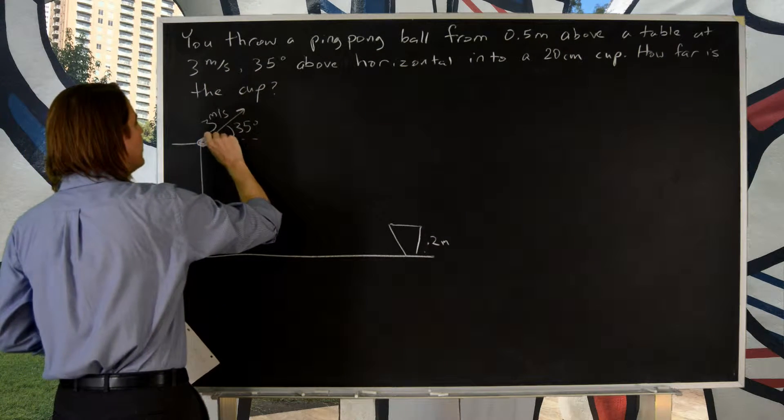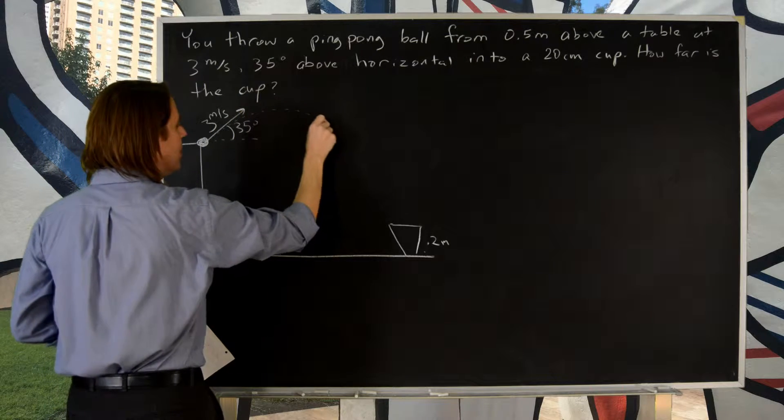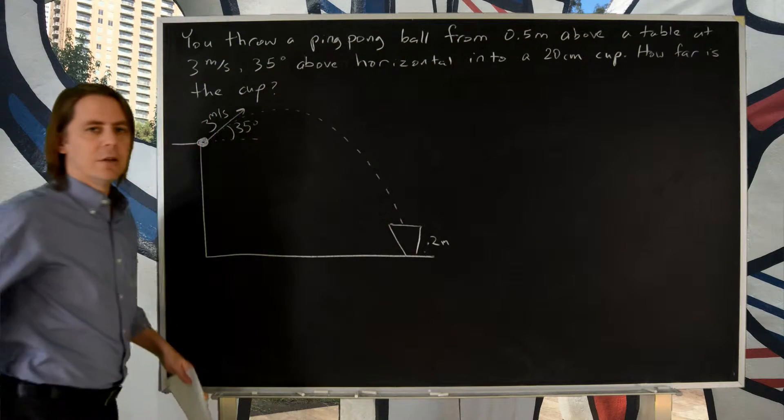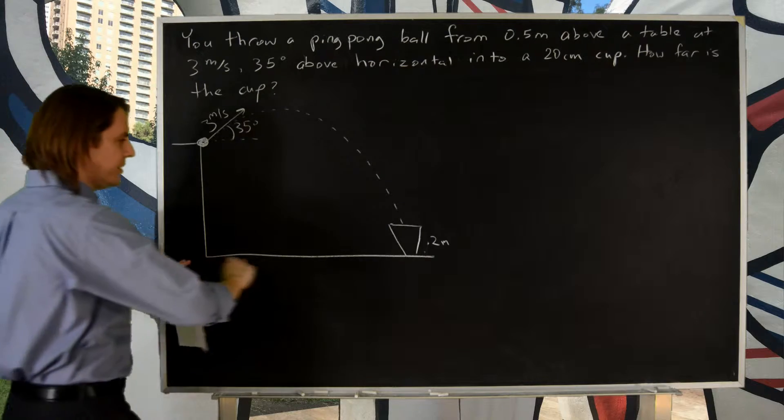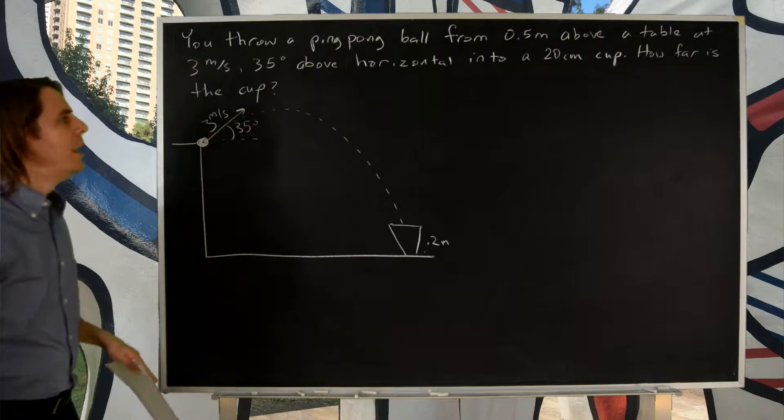So we will draw our trajectory. It goes up like this and begins to fall under the influence of gravity. And it goes in. And the question is, how far away was the cup?